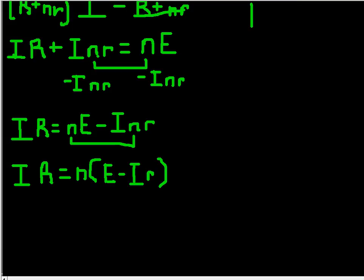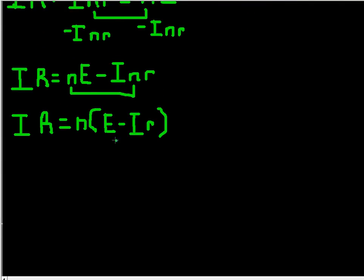And now all I would have to do to get n by itself is divide by E minus IR over to this side. So I'm going to do that, divide it by E minus IR, divide both sides.